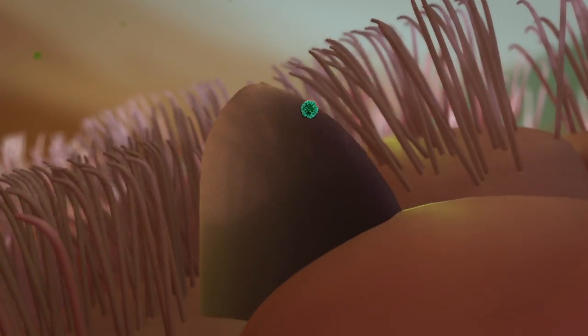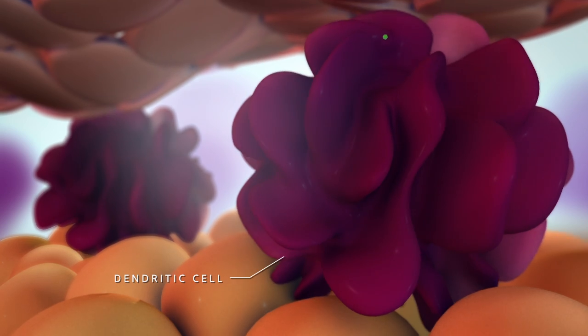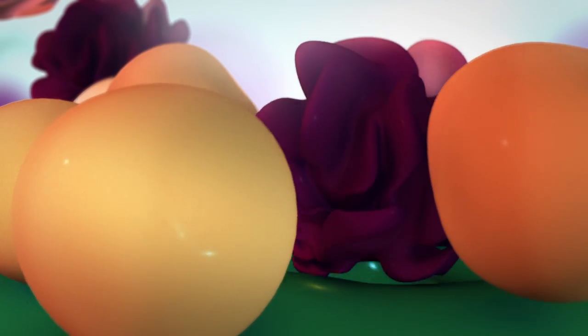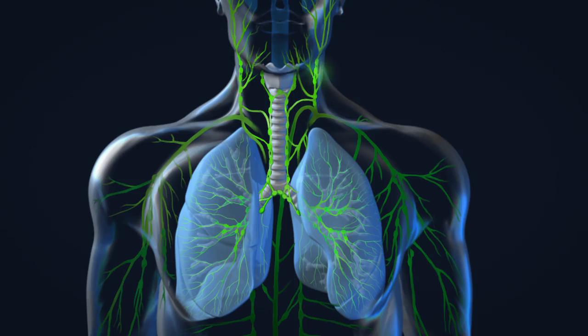Beneath the airway epithelium are dendritic cells, which capture the flu virus and take it into the lymphatic system. Along with dendritic cells, whole viruses also enter the lymphatic vessel, migrating to the nearest lymph node.